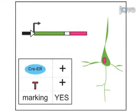The combination of reporter allele, Cre-ER, and tamoxifen results in marking. When a cell population is initially marked in a primordial brain region of the embryo...